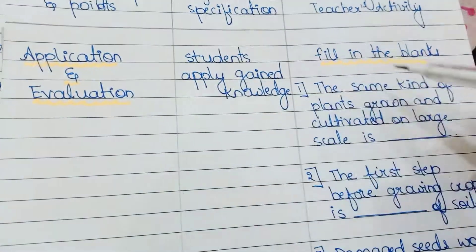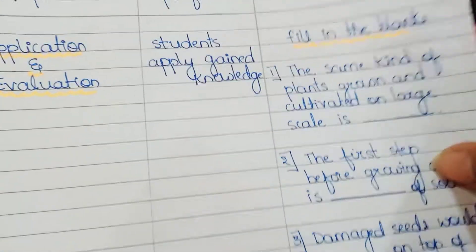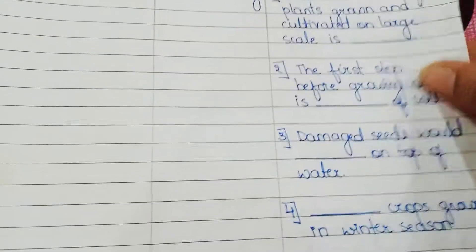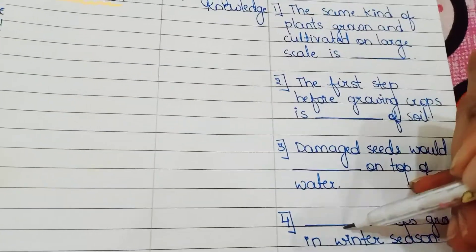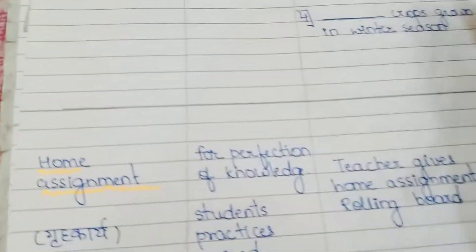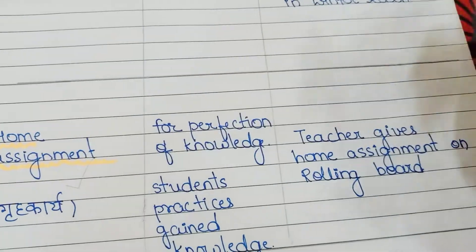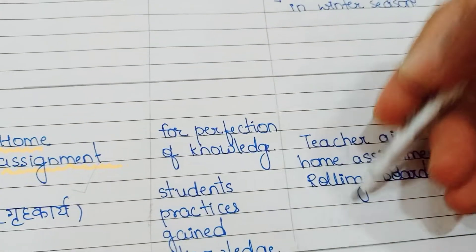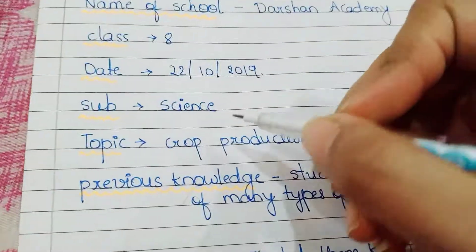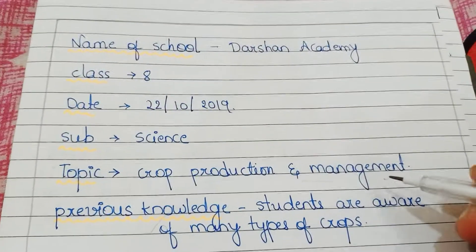For application and evaluation, fill-in-the-blank questions are included — four fill-in-the-blanks are added here. There is also a home assignment section, because for reinforcement of knowledge we need to give home assignments to students. This concludes the lesson plan on the topic crop production and management.